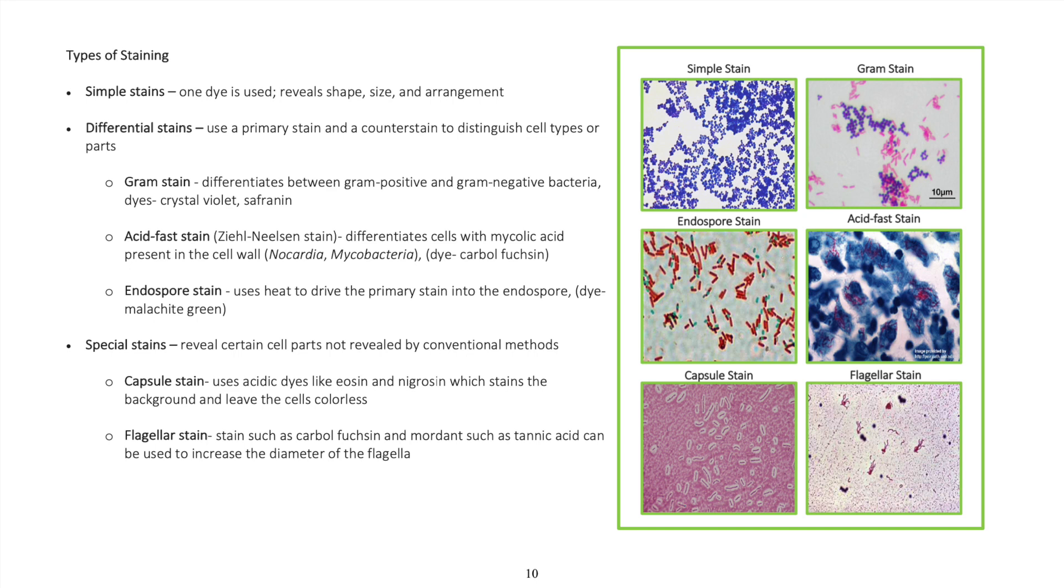Special stains reveal certain cell parts not revealed by conventional methods. Capsule stain uses acidic dyes like eosin and nigrosin which stain the background and leave the cells colorless.